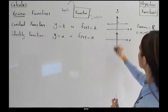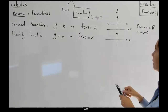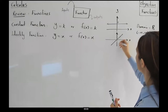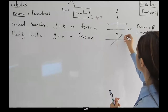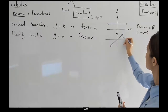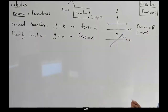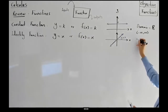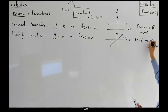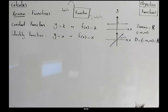The graph of the identity function has an X axis and a Y axis, and this is your identity function: Y equals to X, or F of X equals to X. As you can see, the domain is from negative infinity to positive infinity — we write D equals negative infinity to positive infinity, or just the real line.